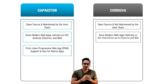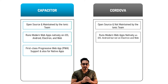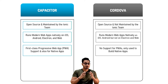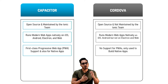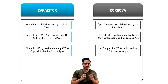Capacitor provides first-class support for Progressive Web Applications (PWAs) as well as native applications. Cordova, on the other hand, does not provide support for PWAs — it is only used to build native applications for Android and iOS. This is a very important difference between the two.